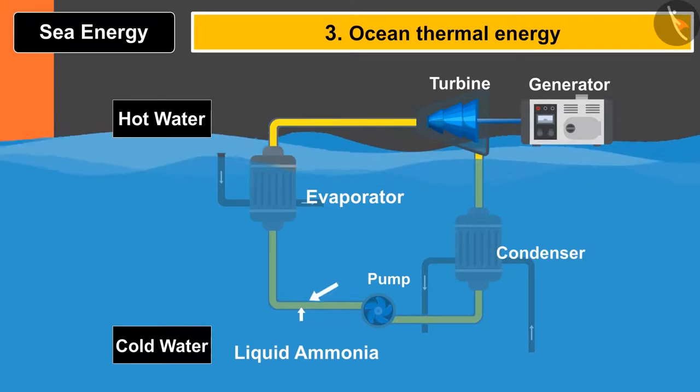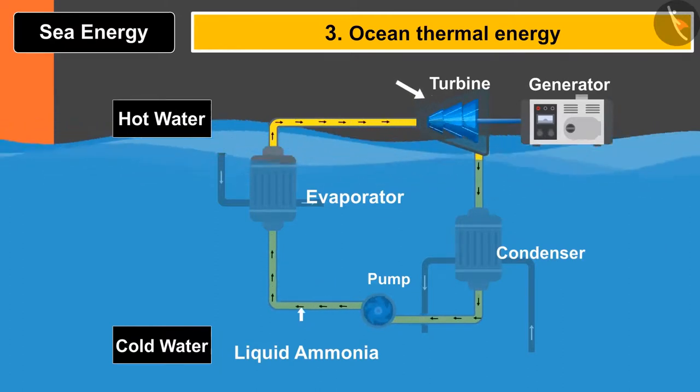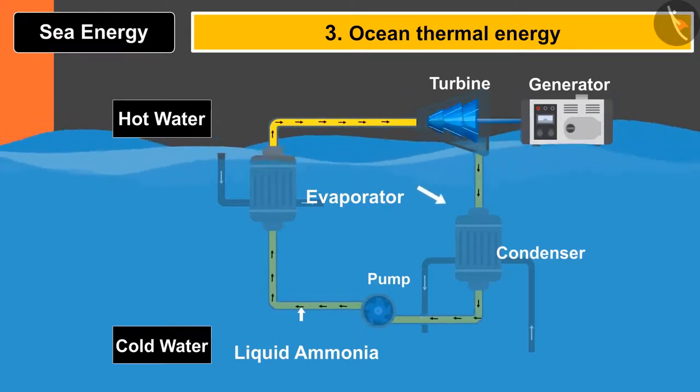A plant is placed in the ocean having an evaporator and a condenser. Pipe is filled with liquid ammonia. Ammonia is sensitive towards the change in temperature. When it comes in contact with the hot water, liquid ammonia converts into vapor and helps in rotating the blades of the turbine. When it goes down near the condenser, it gets condensed and the cycle repeats itself.